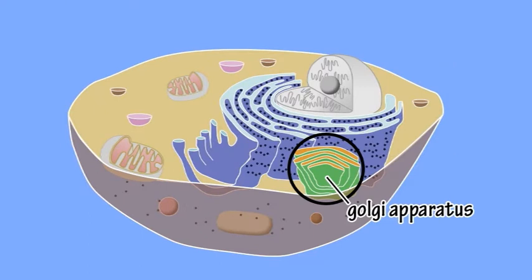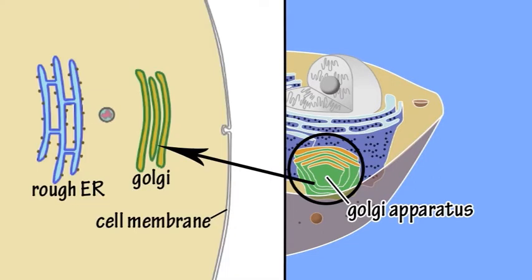The Golgi apparatus, like the endoplasmic reticulum, has the appearance of a stack of flattened-out sacks, where macromolecules such as proteins manufactured by the ribosomes in the endoplasmic reticulum are processed and packaged before being secreted by the cell.